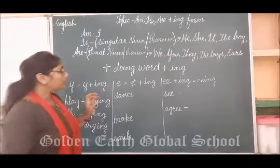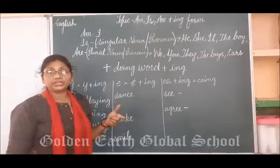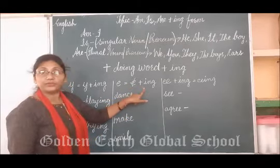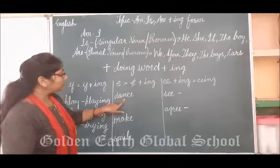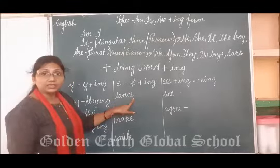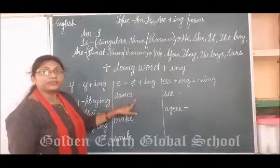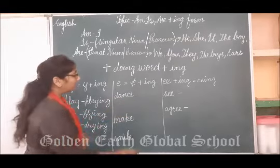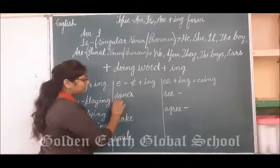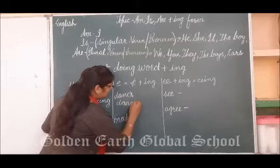And now, if any word ends with E, then we do not keep the E when we add -ing with it. For example, dance. Dance ends with E, so we are not going to add -ing directly. We will just cut the E — like this, see. Dance, so it will become dancing.